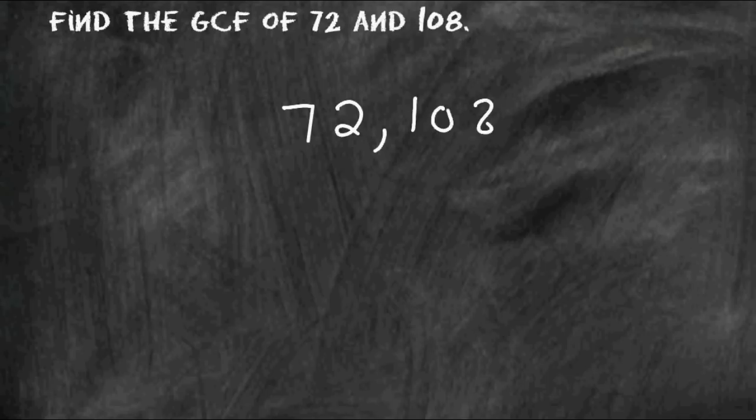And then we draw our upside down division sign around the two numbers. Next we try to identify any common factor that can fit into 72 and 108. And remember, you don't have to start with the greatest common factor because we will eventually figure out what that is.